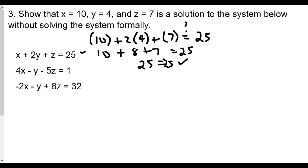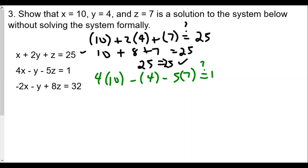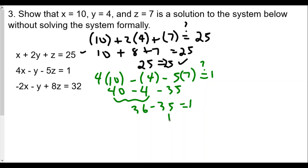The second equation is 4x minus y minus 5z equals 1. Again, we're plugging in the given answers to see if they work. So 4 times 10 minus 4 minus 5 times 7 — will that equal 1? We get 40 minus 4 minus 35. That gives us 36 minus 35, which equals 1. That works out fine.